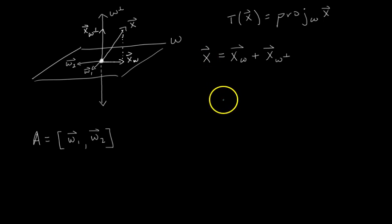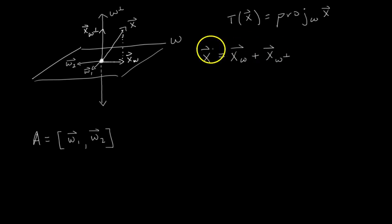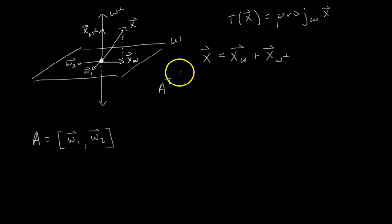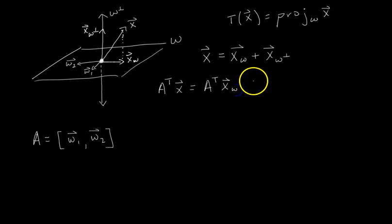Now, this is just where the proof starts. Let's multiply both sides of this equation by A transpose. So we get A transpose times X equals A transpose times X sub W plus A transpose times X sub W perp.